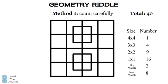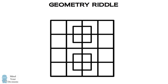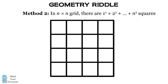Did you figure it out? Now there's a shortcut we could use if we're going to do problems like this. If you have an n by n grid there will be 1² + 2² + ... + n² number of squares.